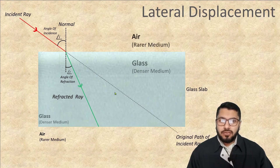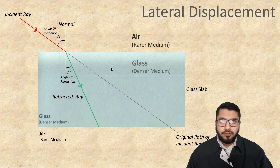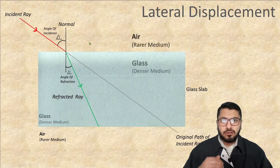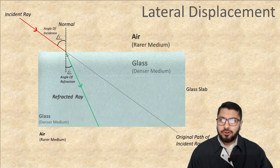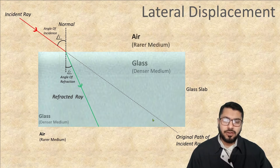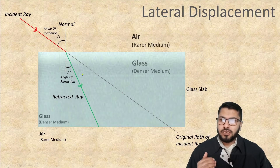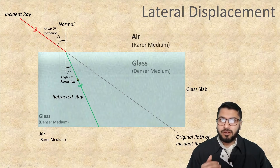I have drawn another dotted line showing the path if no glass slab is involved — meaning there is only air. The ray would go straight, so this would be the original path of the incident ray. But due to the medium change, the ray is deflected and becomes a refracted ray.